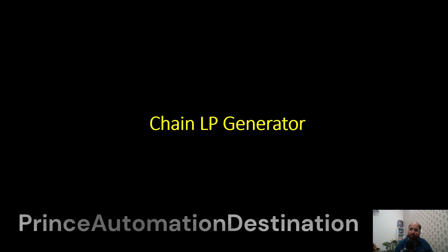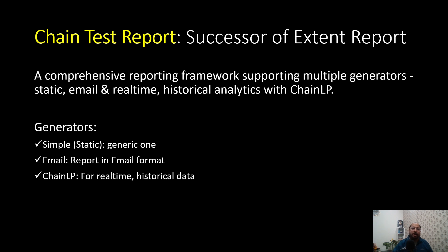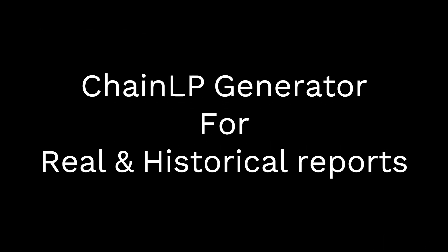Hello everyone, welcome back to my channel Prince Automation Destination. In our last lecture of the chain test report series, we discussed what chain test report is — it is the successor of extent report, as extent report is getting sunset. We also understood how to configure chain test report in a BDD Cucumber-based framework and generated two types of reports: simple and email, using simple generator and email generator respectively. If you are not aware of chain test report, please check out my previous video.